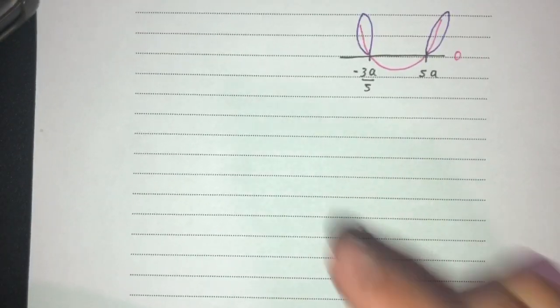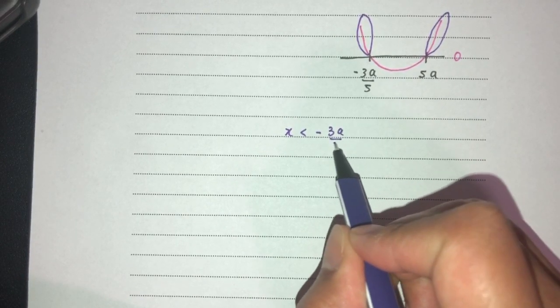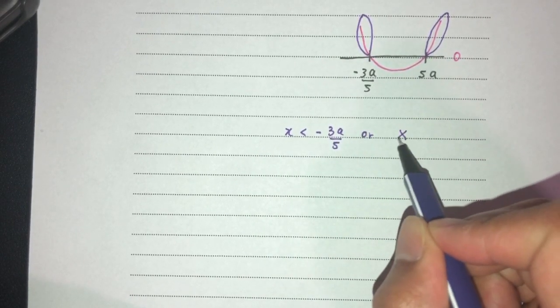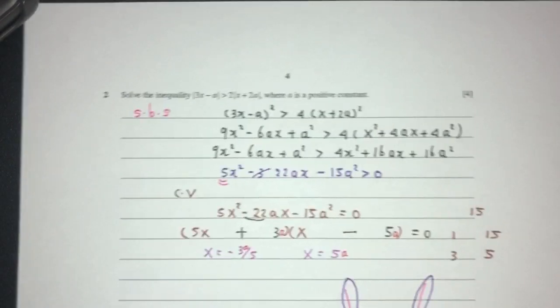Therefore we confirm, x have to be less than minus 3a over 5, or x have to be more than 5a. This is your answer for question number 2.